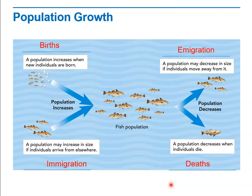When determining the rate of population growth, we take the birth rate plus the immigration rate and subtract the death rate and the emigration rate. If we end up with a positive number — more births and immigration than deaths and emigration — we have a growing population. If those numbers come out the same, birth plus immigration equals death plus emigration, we have a stable population. If deaths plus emigration ends up being greater, then we have a decreasing population size.